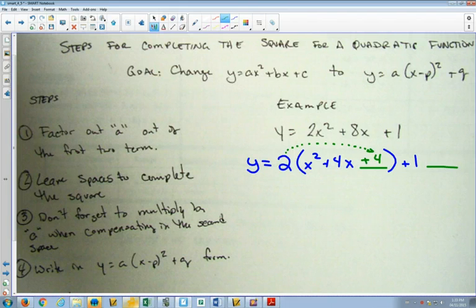So, I haven't actually added 4. I've added 8. By putting that 4 in that green space, can you see that I've added 8? So, to compensate, I need to subtract 8. Since the spaces are on the same side, if you add in one space, you're going to have to subtract in the other space.